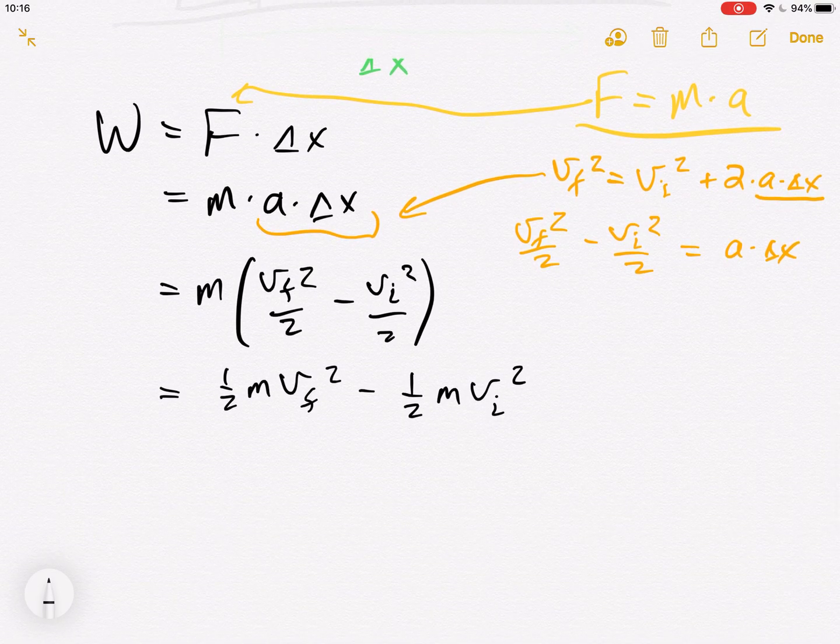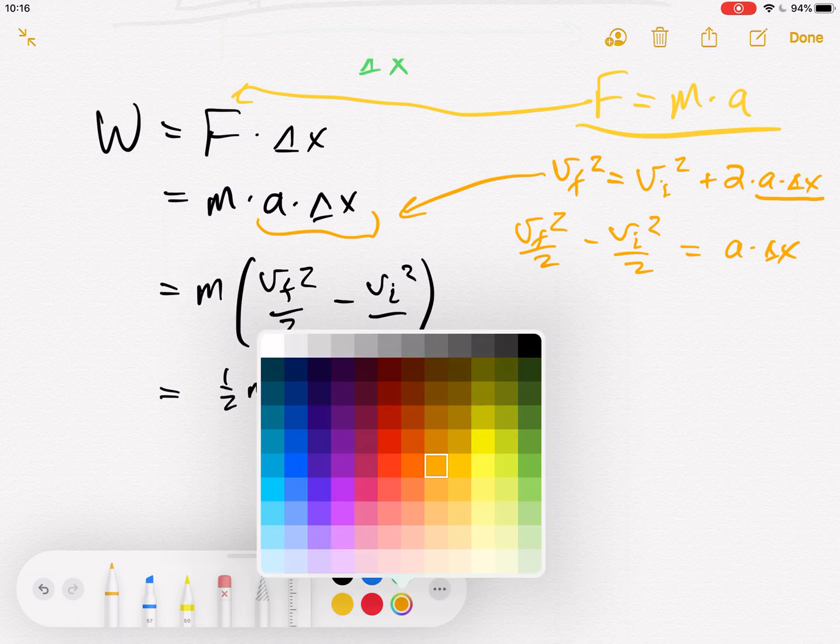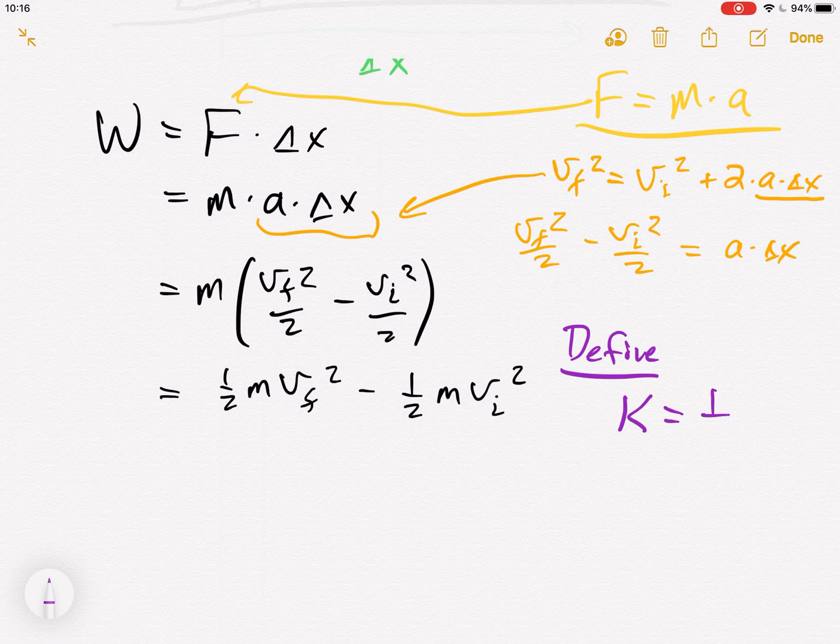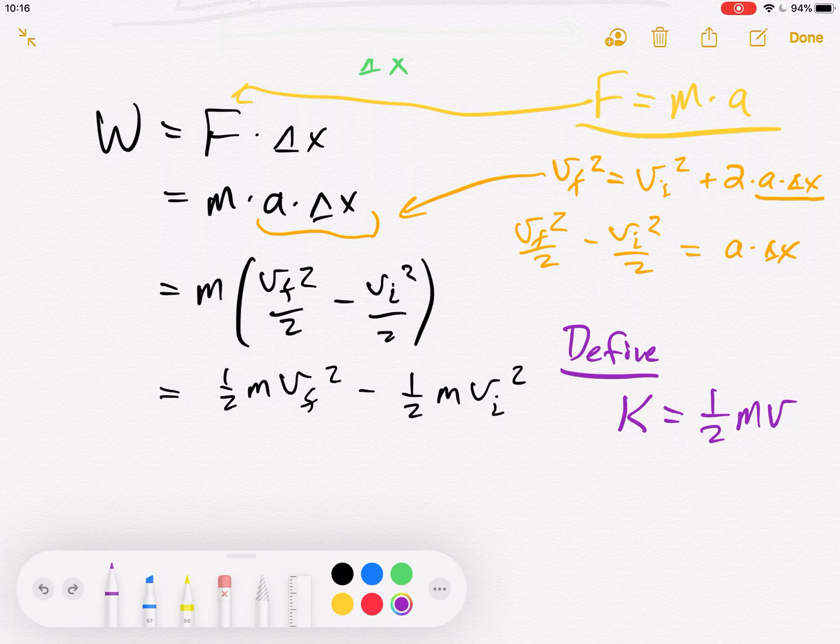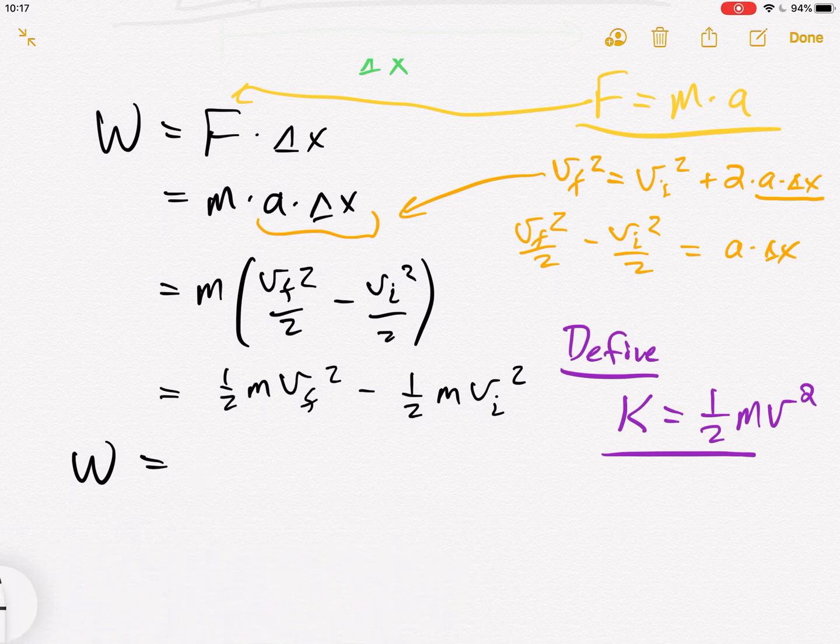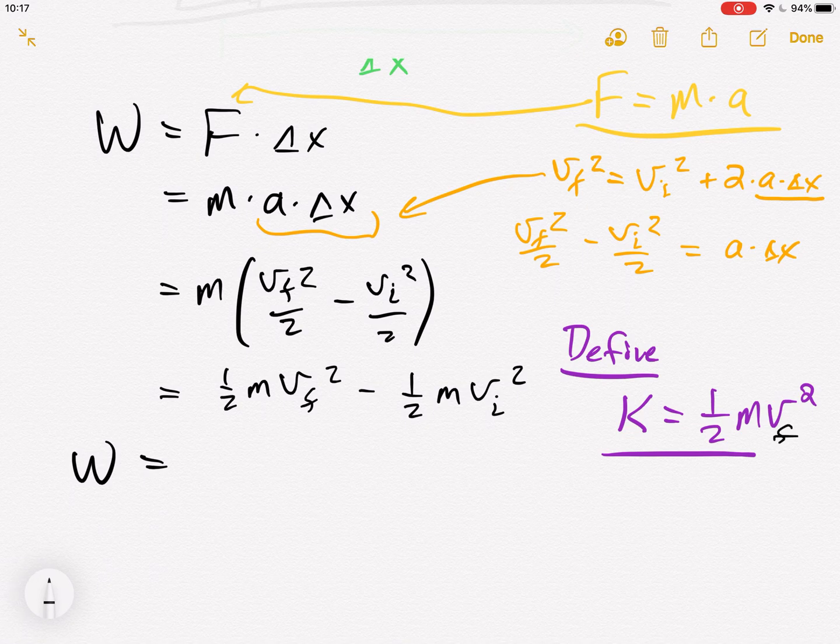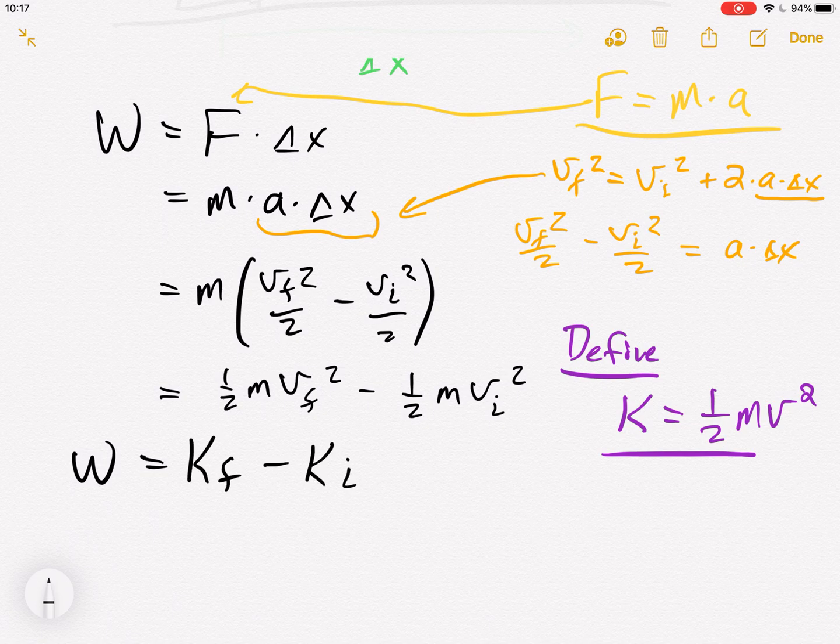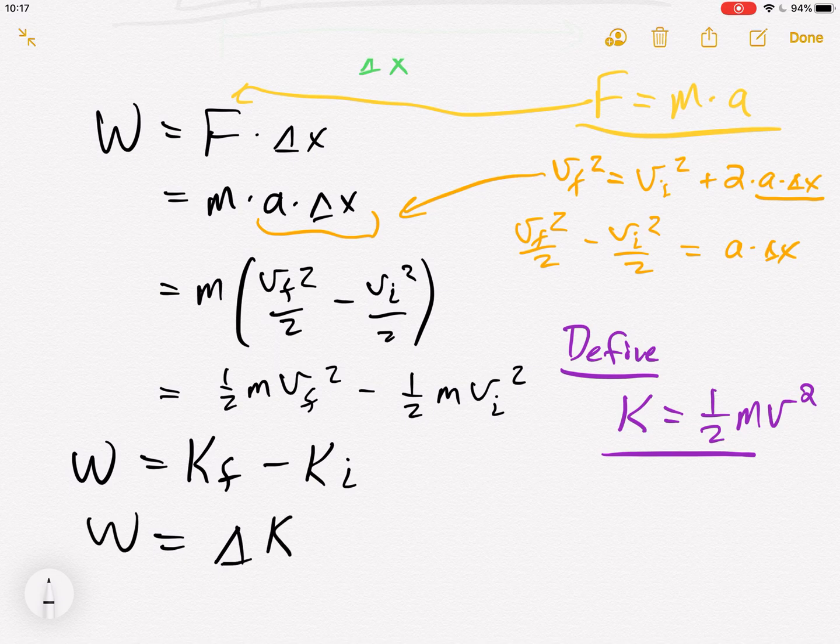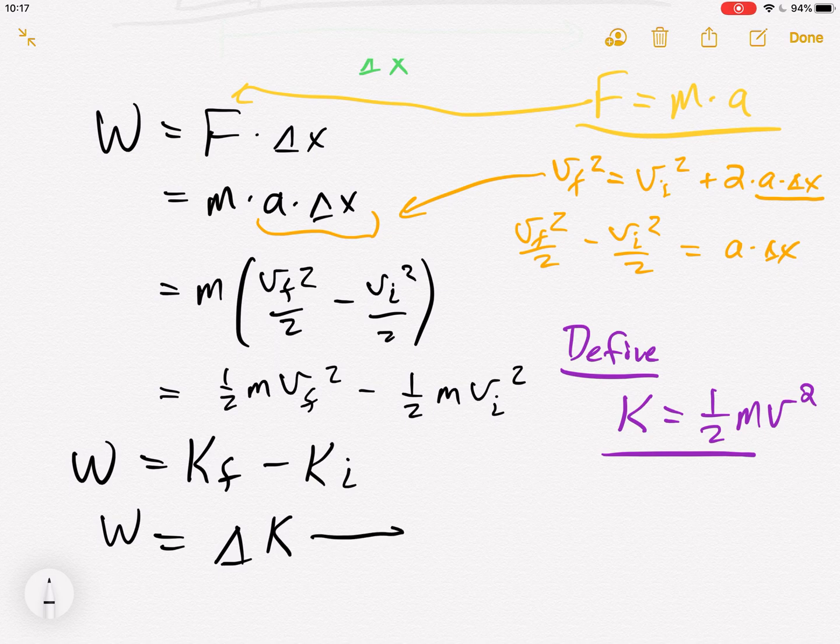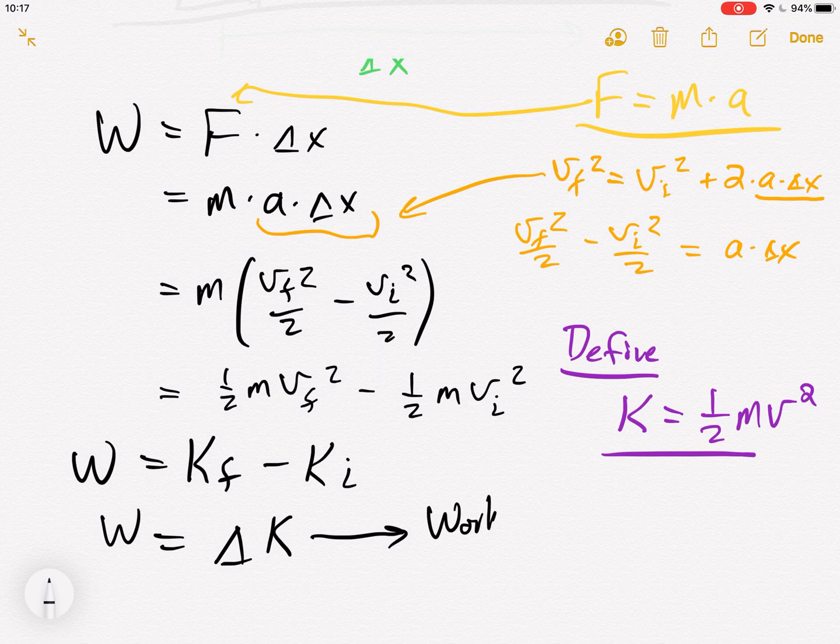Now it looks like if I defined a quantity that was, let's use purple, let's define k as half m v squared. Then work leads to a change in that quantity. Do you see that? Then work is half m v final squared. So if I plug in a v final here, that will give me a k final. So we'll say k final minus k initial, or sometimes we just call that delta k. Since final minus initial for any quantity is something we call delta.